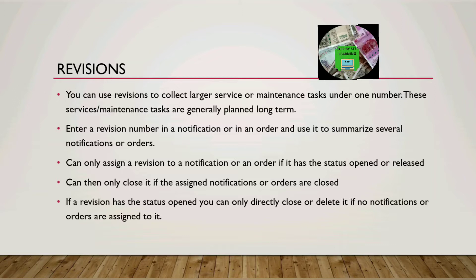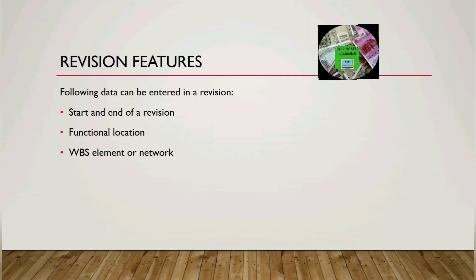Now we will see the revision features — what data we can enter in revisions. We can enter a start date, end date, start time, and end time. For example, if you are planning a shutdown for a plant of five days, you enter the start and end date and time. You can also restrict to specific functional locations. WBS element or network can be input for accounting purposes.